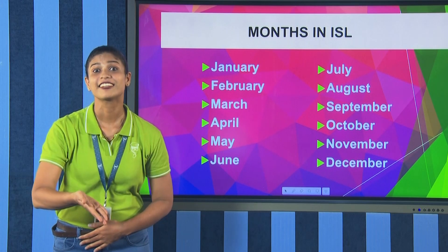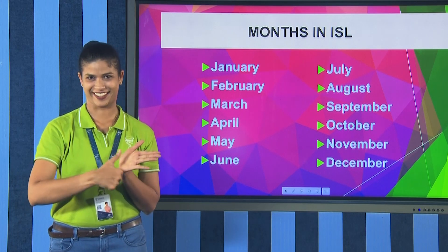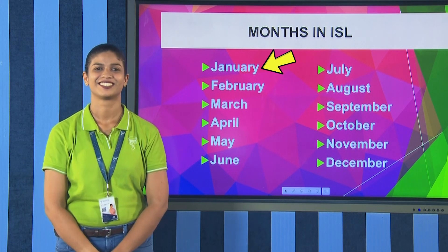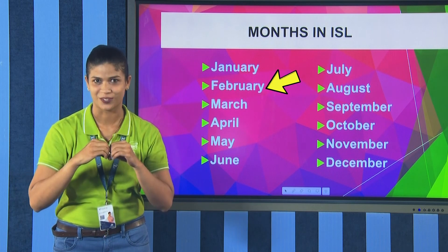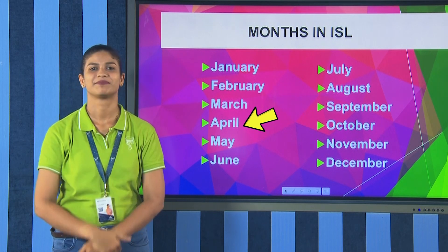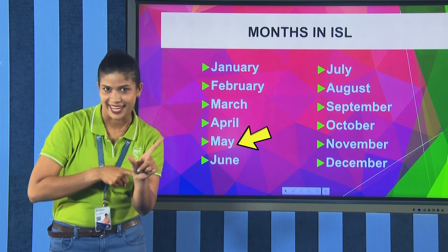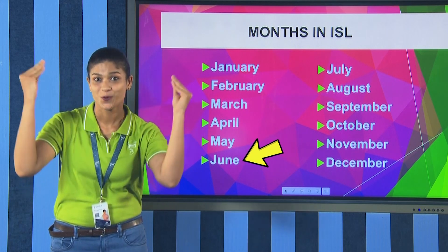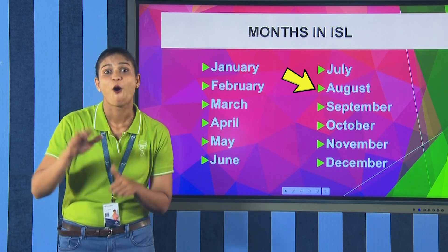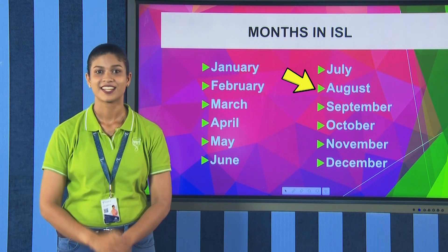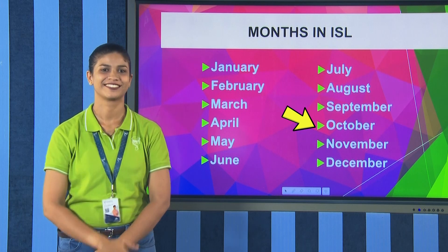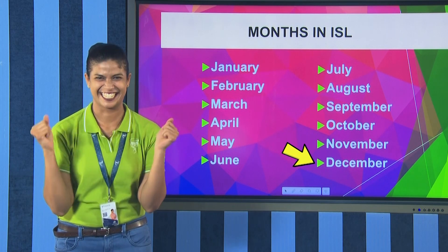So we are moving to the next topic: months in ISL. January, February, March, April, May, June, July, August, September, October, November, December.